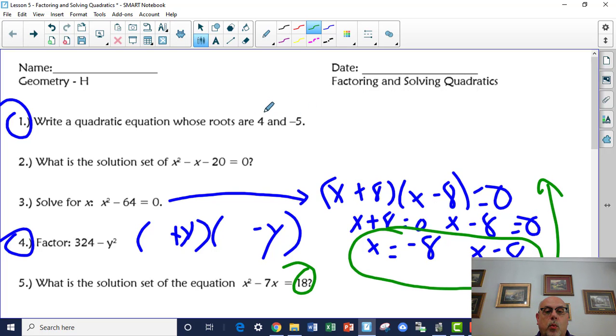A problem like number 1, you are starting out with the answers. X equals 4, x equals negative 5. You are going to take those and work backwards to develop the quadratic equation that fit those answers.